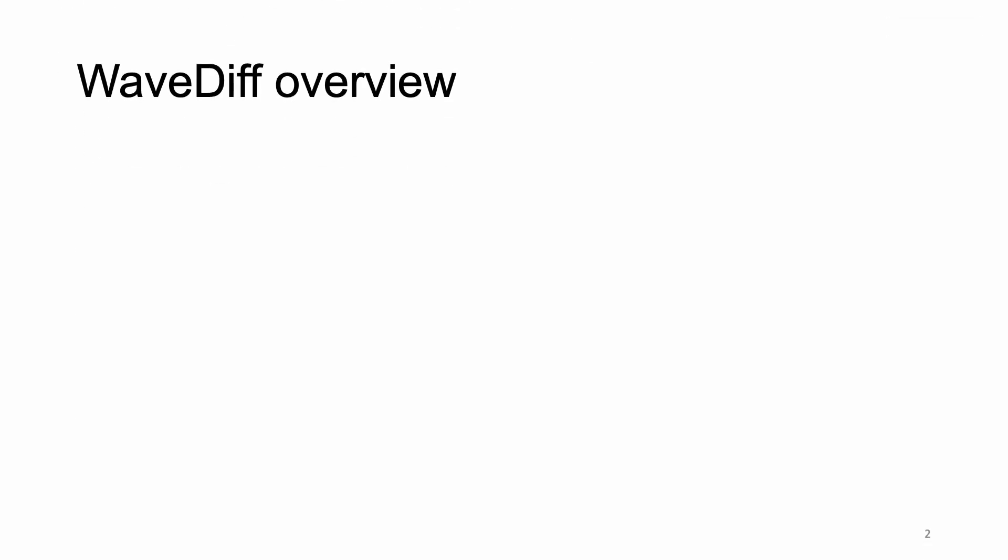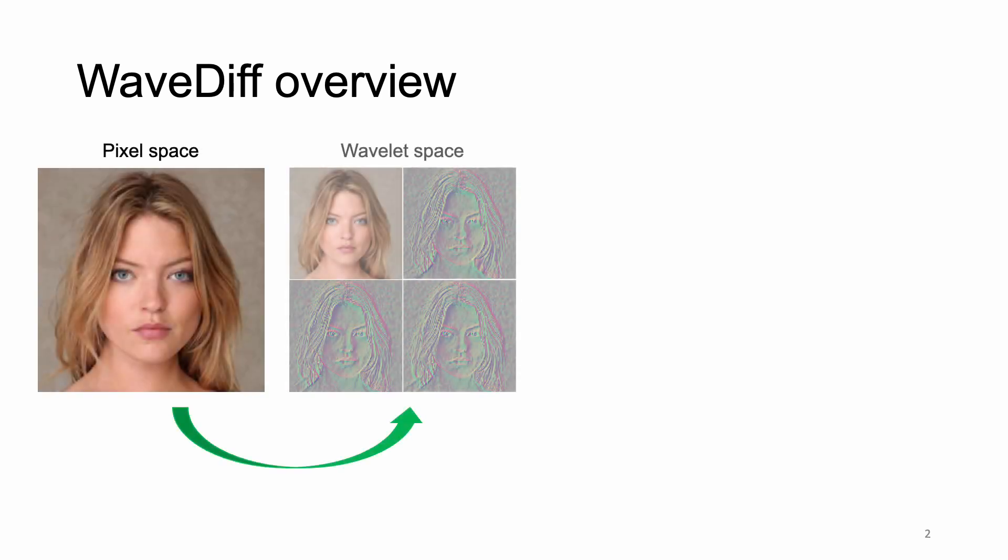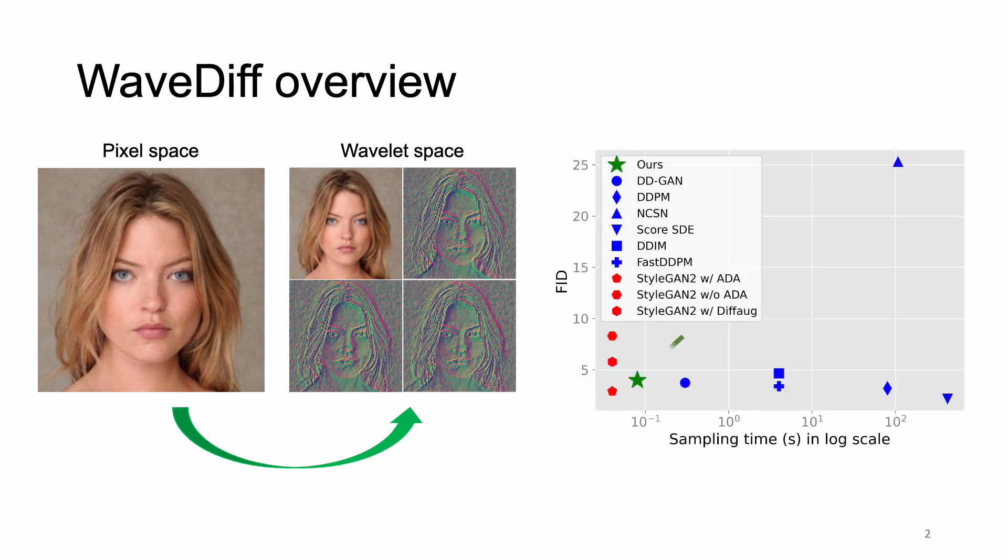Here is the overview of WaveDiff, a novel approach to speed up the sampling process of diffusion models. Unlike conventional diffusion models, we shift the process from pixel space to wavelet space, which employs low and high frequency information to accelerate sampling speed. Empirically, our method is 2.5 times faster than DDGAN, the fastest up-to-date diffusion method, and approaches the real-time speed of StyleGAN counterparts while achieving comparable FID scores.